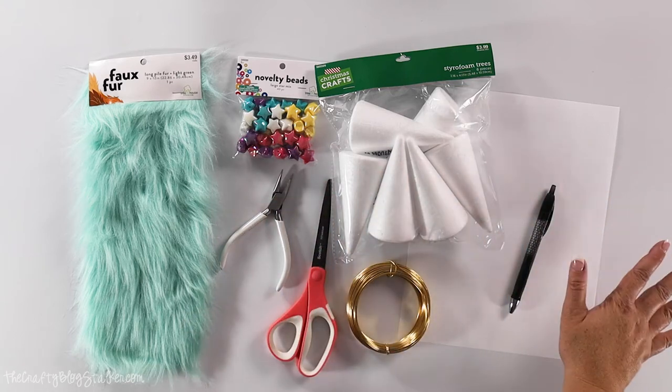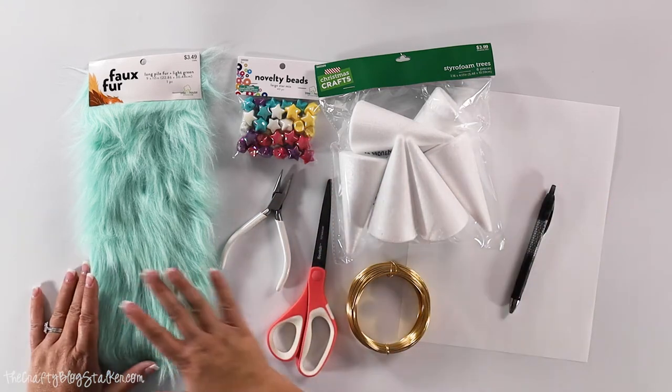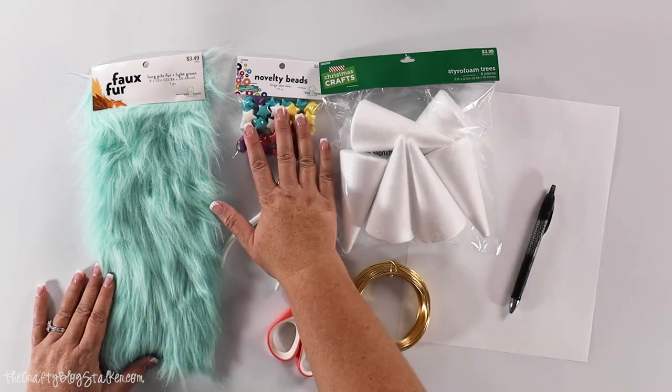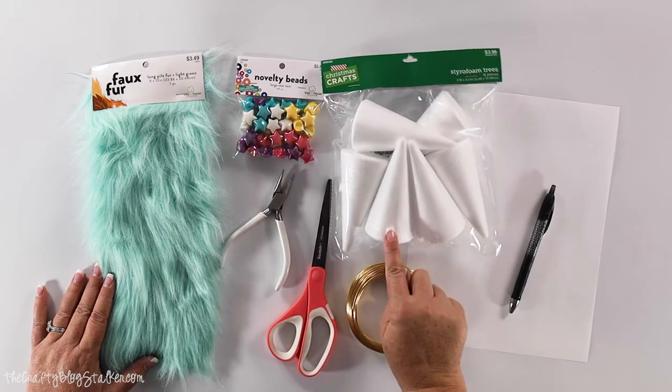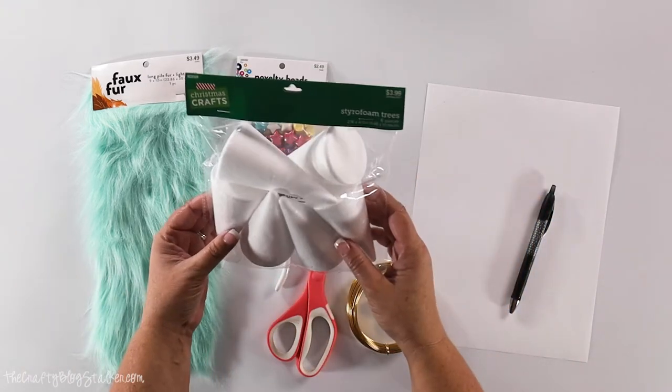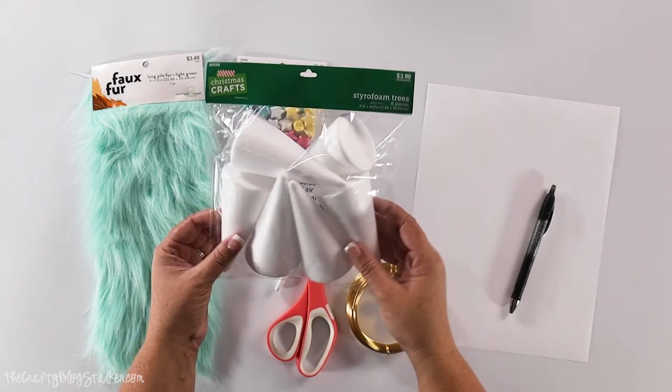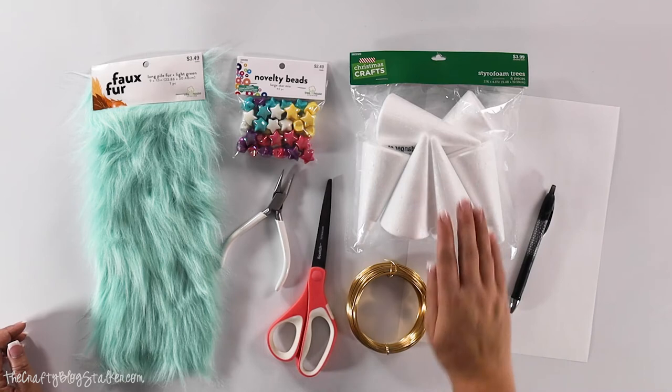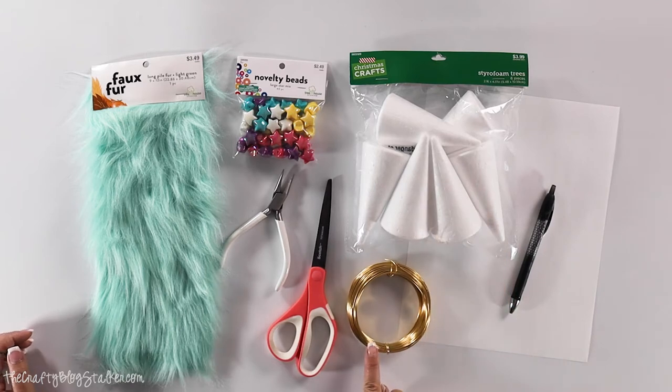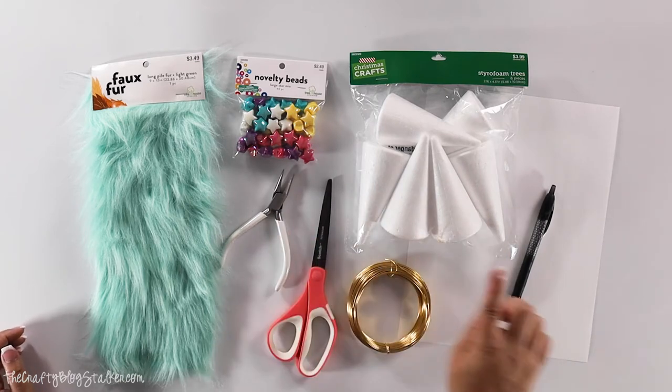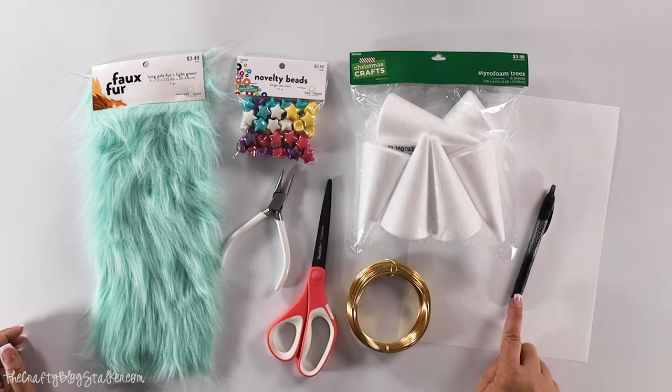I've already got all the supplies that I need out in front of me. I have faux fur, star beads. These are the foam trees that we're going to be using. These come in a pack of six. They are about four inches tall. Got those at Hobby Lobby. And then some gold wire, scissors, needle nose pliers, and then some paper and a pen.